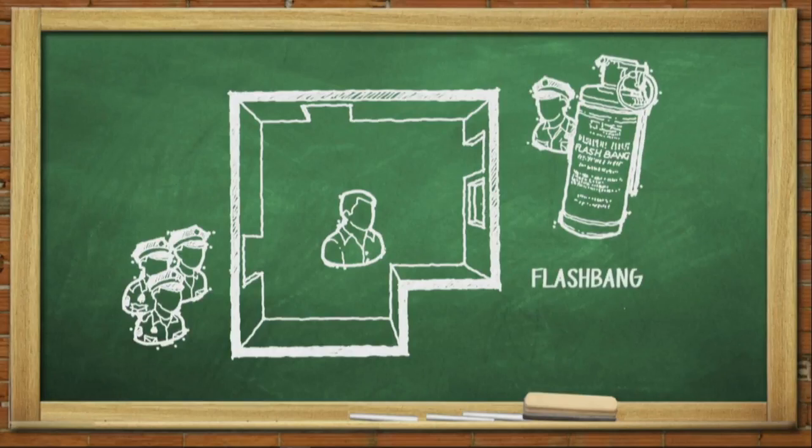So what we would do instead is we would stage somebody on the other side with a flashbang. A flashbang is a canister. And there's a reason why they call it a flashbang. We're so creative. You know why they call it a flashbang? Because it does two things.